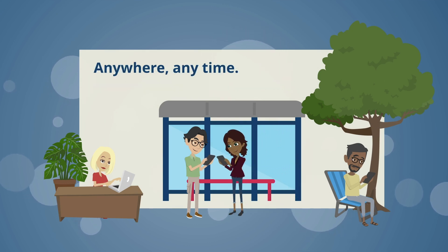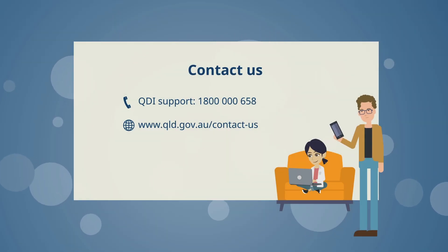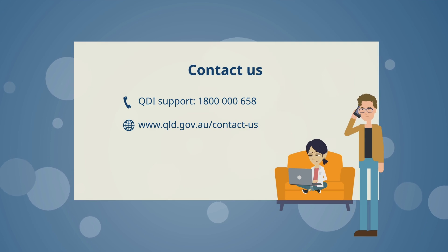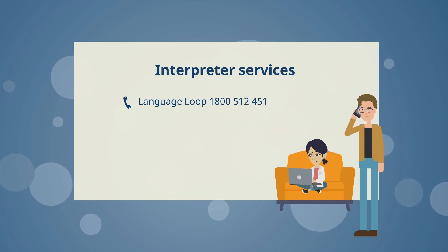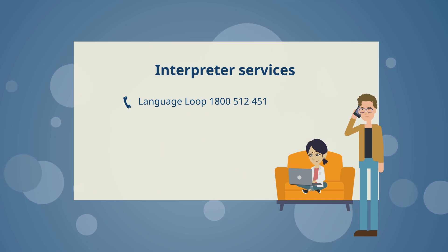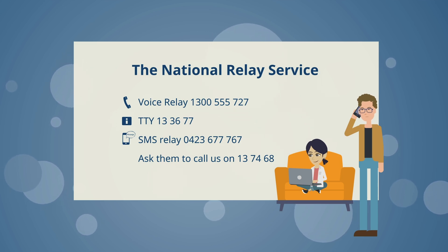Anywhere. Anytime. If you need some help, we've got you covered. You can call, chat, email or visit us in person at over 90 locations. If you need an interpreter, you can call Language Loop for support in your language. If you're hard of hearing or deaf, you can contact the National Relay Service.